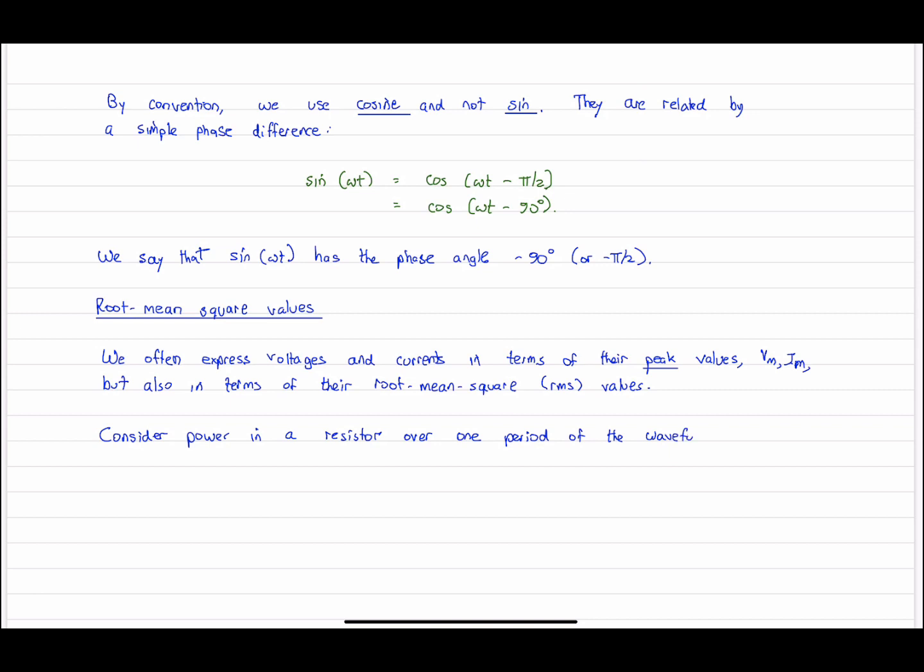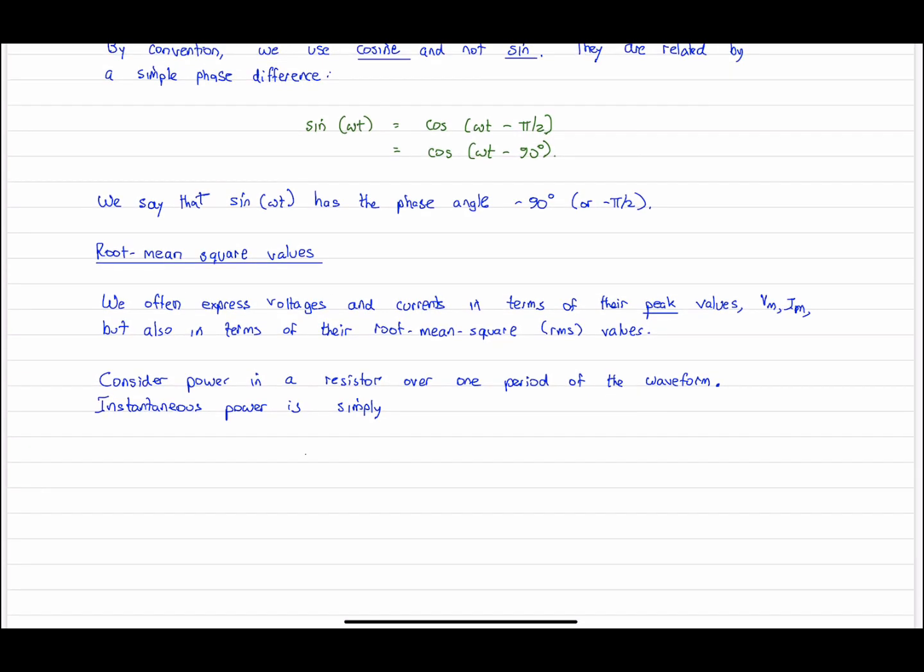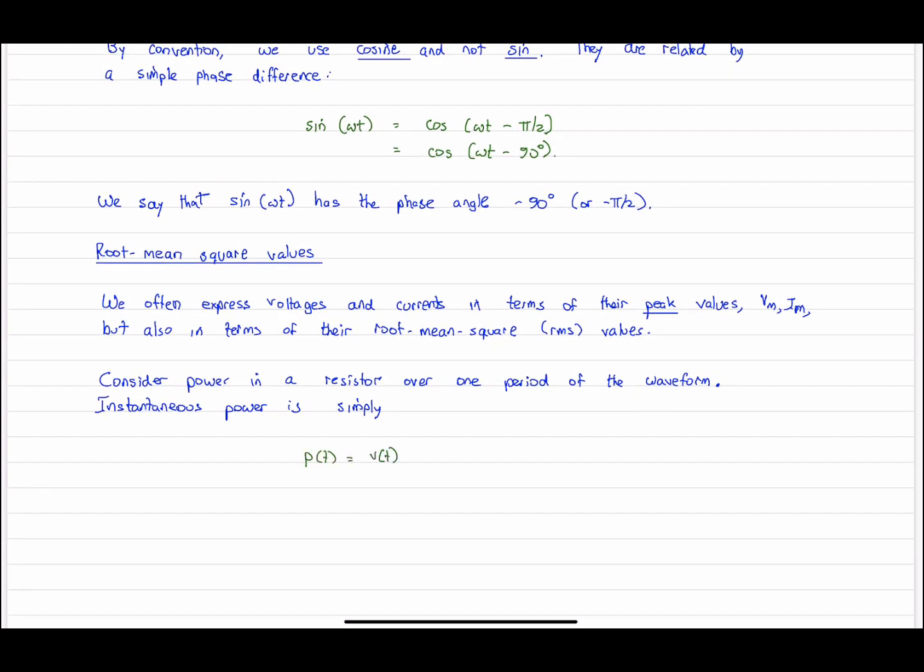And at the basis of this calculation is the power in a resistor. And we're going to consider this power over one period. Since the voltage and current are all periodic, we can do this over one period, so it's the same over all the periods. So we calculate power, instantaneous power in this case, in the usual way. It's voltage times current. And for a resistor, the voltage is used to calculate the current. So V over R is the current, so we get V² over R. So a familiar expression for power.